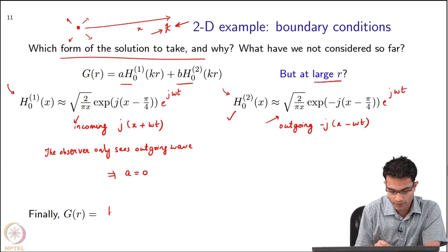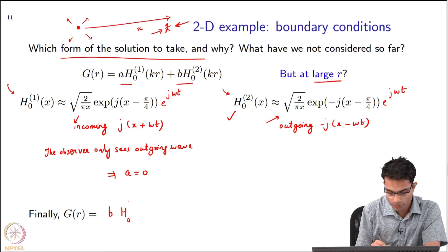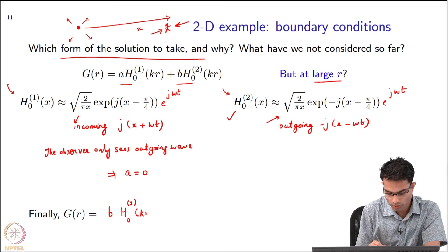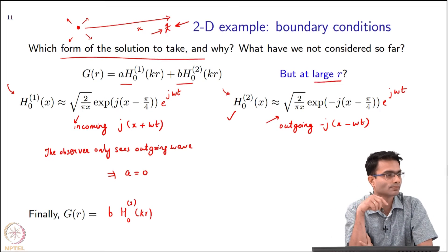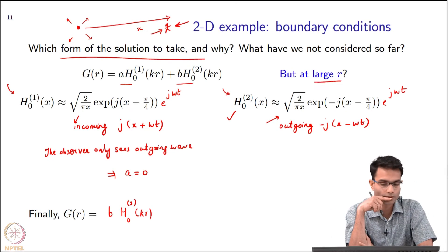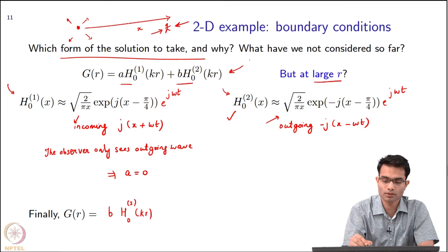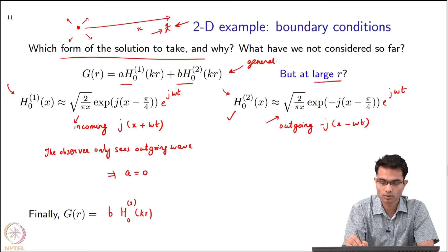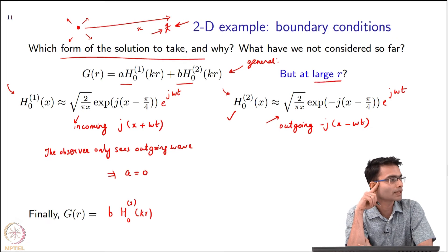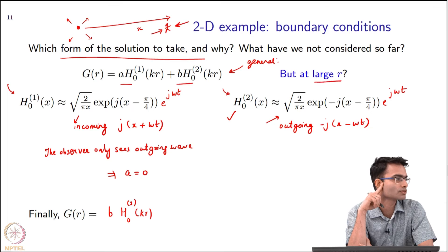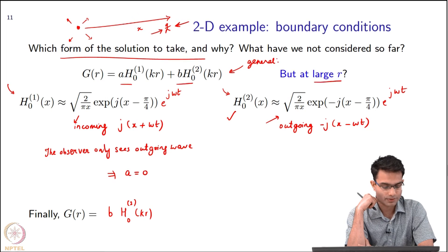Therefore, I can write that the final form is b·h₀⁽²⁾(kr). We started with a general solution over here and we said physically that a equals zero is the only meaningful thing, and that gives me this.